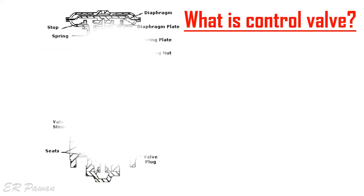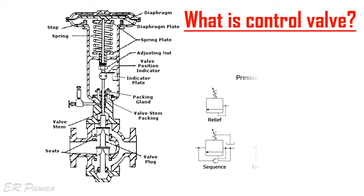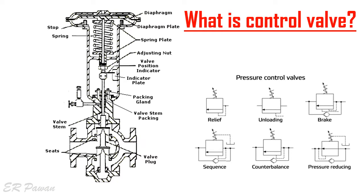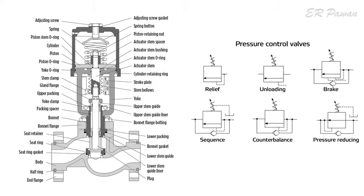What is a control valve? A control valve is used to monitor the flow of fluid by changing the flow passage via the control signal. Pressure, temperature, and liquid level are the important process quantities in a control system. Control valve allows the direct control of flow rate of these process quantities. The most important final control element in a closed loop system is the control valve.